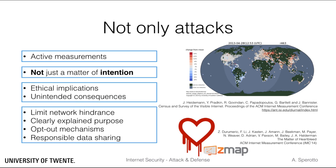It might seem that the malicious or legitimate nature of a scan is only a matter of intention, but I do not believe this is the case. The fact that one can scan the internet does not imply one should. The research community is constantly reflecting about the ethical implications and possible consequences of active measurements. It is considered best practice to limit network hindrance at both the source and destination, and to be clear about the goal of your study and that it is done for research purposes. Some targets might not want to be part of the scan, so a proper study should include an opt-out mechanism. Finally, once data are collected, researchers need to decide carefully if and how data can be shared, since data sharing is crucial for the research community but might endanger targets — measures like responsible disclosure should be taken.